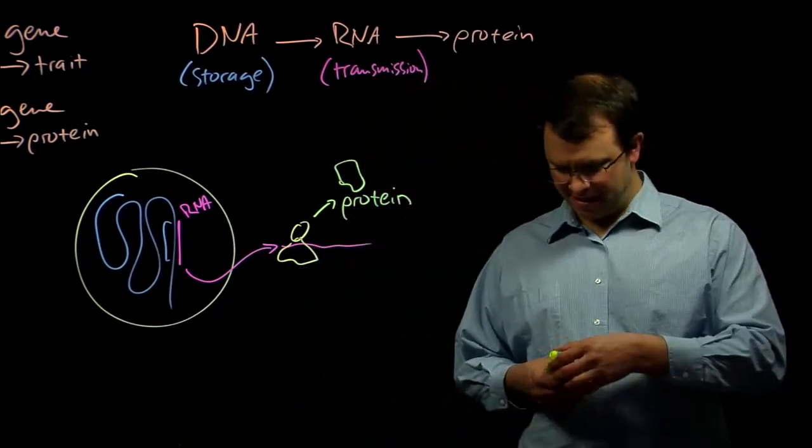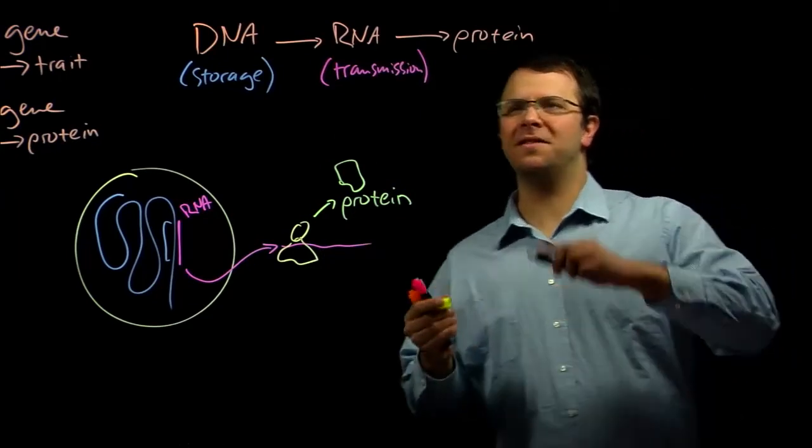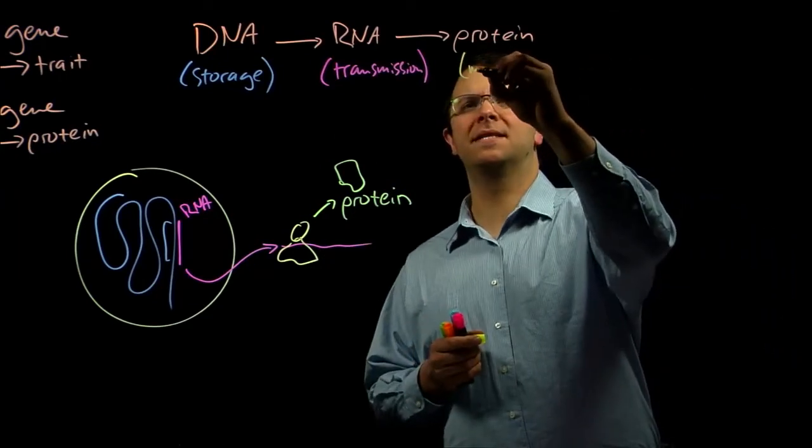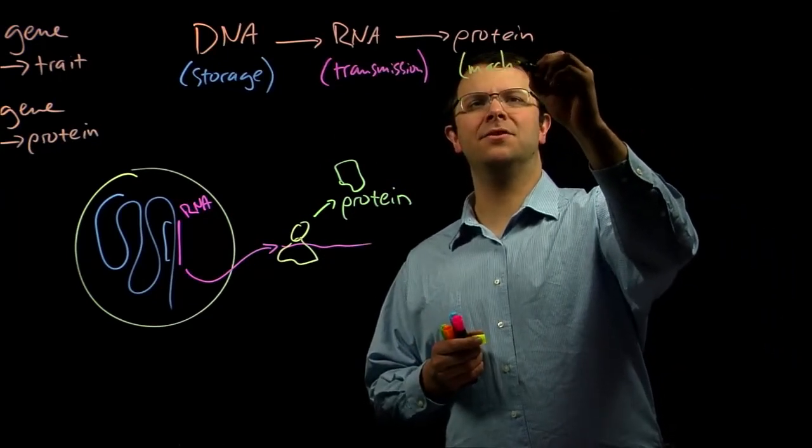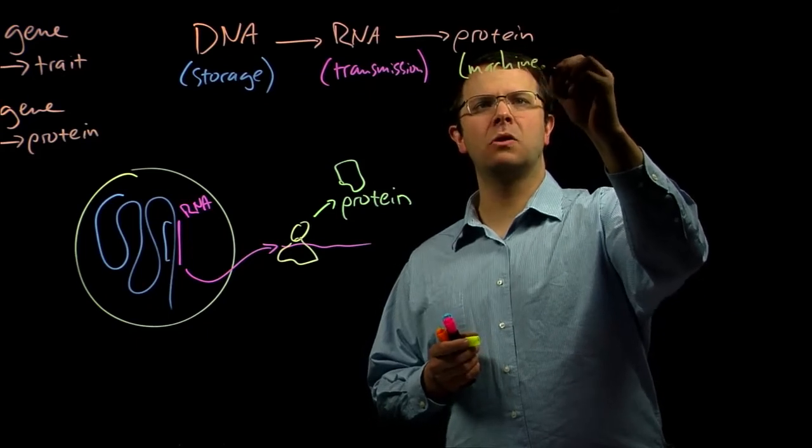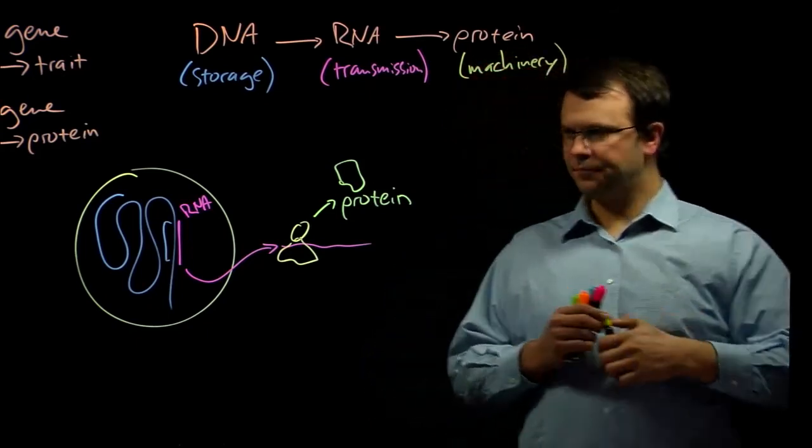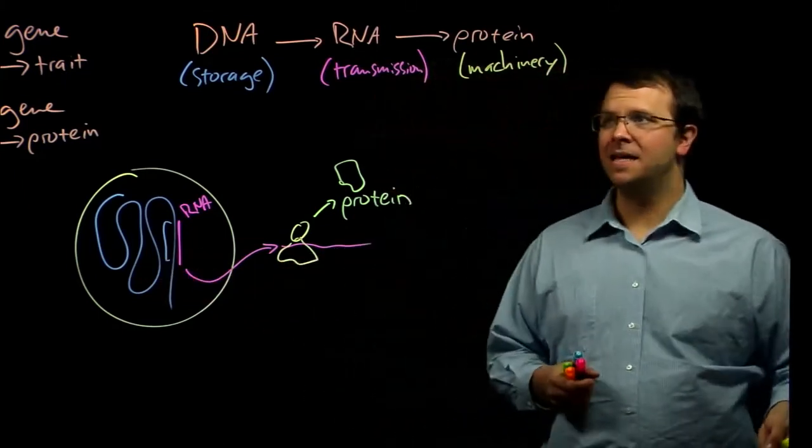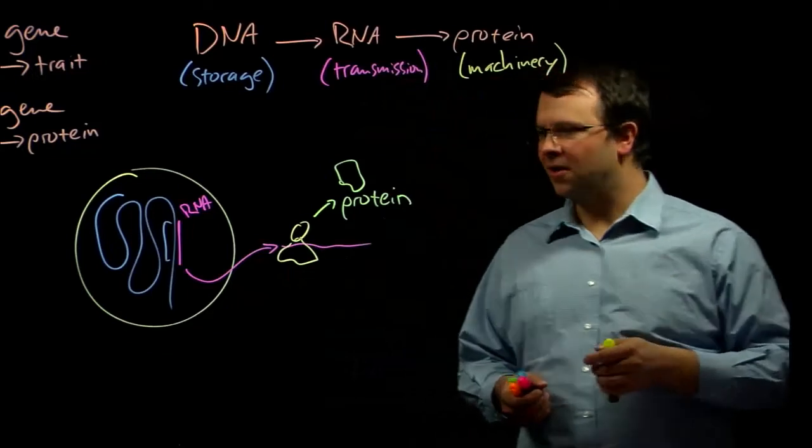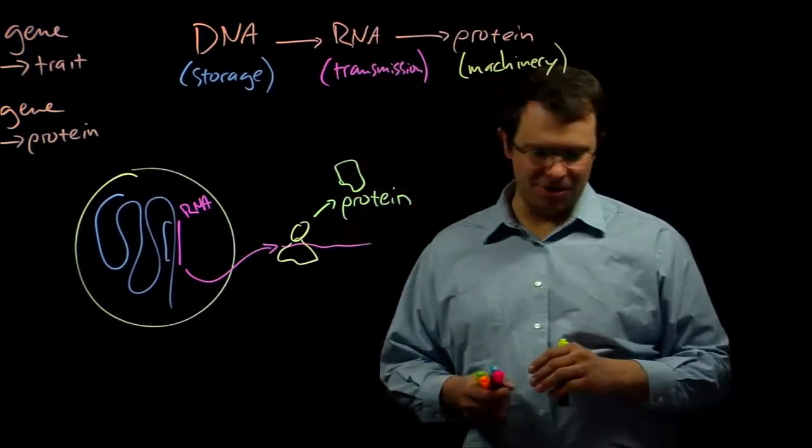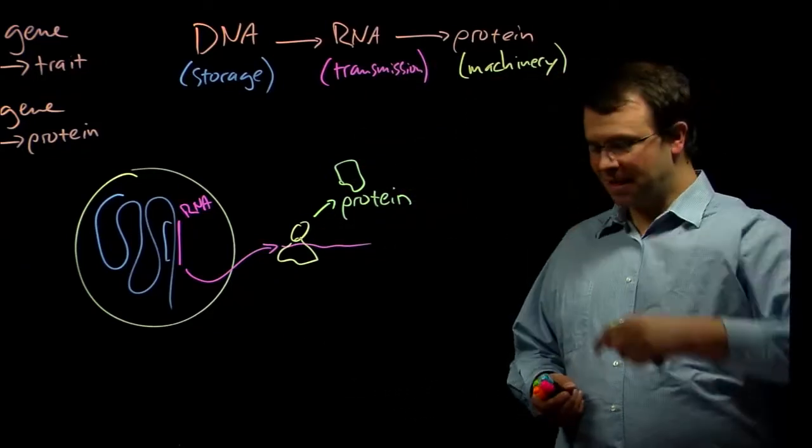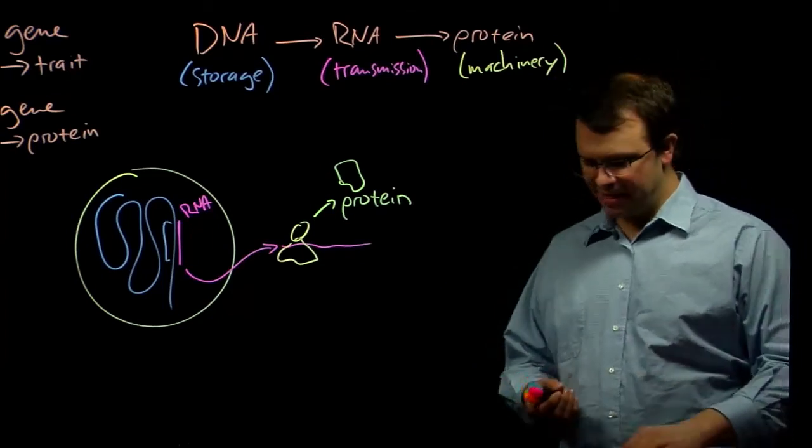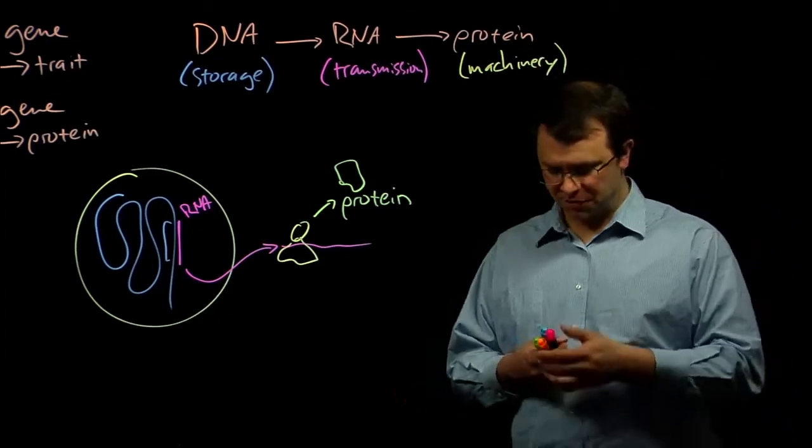And finally, the proteins are the actual functional bits. These are the cellular machinery. And so the information that is stored in the DNA is copied into RNA, moved out into the cell where it is turned into proteins, which are actually the functional bits.